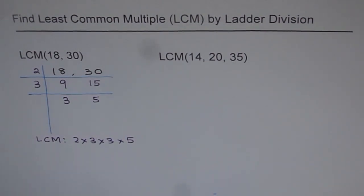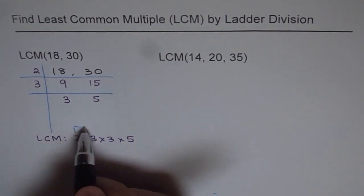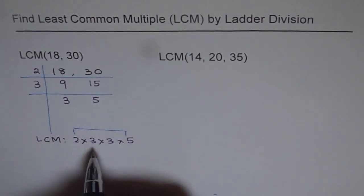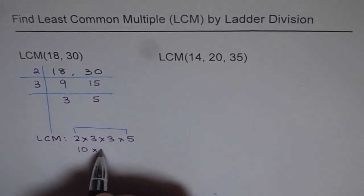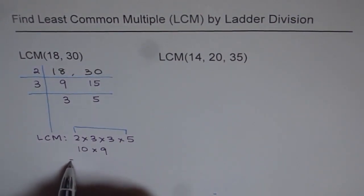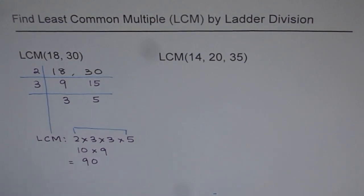Now you can multiply them and get the answer. The most convenient is 5 times 2 first, that gives you 10, and then 3 times 3 is 9. So you get 10 times 9 and that is 90. The LCM for 18 and 30 is 90.